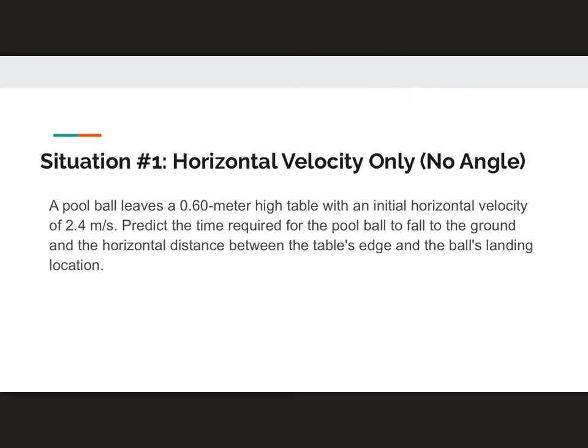Our first type of projectile motion problem is horizontally only being launched. A pool ball leaves a 0.6 meter high table with an initial horizontal velocity of 2.4 meters per second. Predict the time required for the pool ball to fall to the ground and the horizontal distance between the table's edge and the ball's landing location.